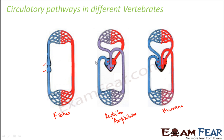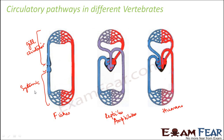All of them have a closed circulatory system. In a fish, the deoxygenated blood is taken up by the gills — this upper portion denotes the gill circulation. The oxygenated blood comes from the gills and goes to different parts of the body, which is the systemic circulation. So in fishes, this is one single circulation where both gill circulation and systemic circulation take place.